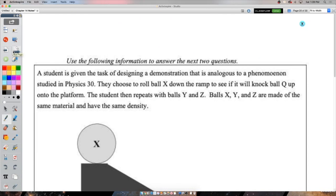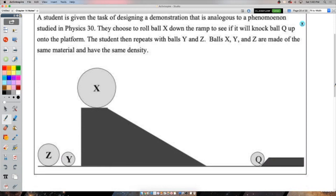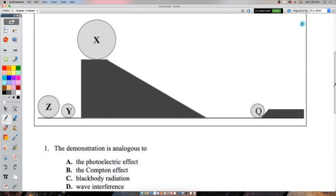Some more kind of theory-ish questions here. So a student is given the task of designing a demonstration that is analogous to a phenomenon studied in Physics 30. Analogous basically just means it provides an analogy. So it's not really the experiment, but you could maybe use it to picture the experiment with different ideas. So they roll ball X down the ramp to see if it will knock ball Q up onto the platform. And then they repeat with balls Y and Z. X, Y, and Z are all made of the same material and therefore have the same density. So that's just saying that because X is bigger, you can assume it has more mass. If they have the same density and density is mass per volume, then that just means more volume equals more mass.